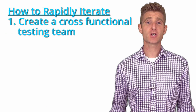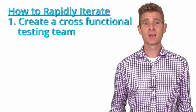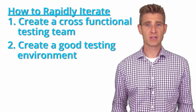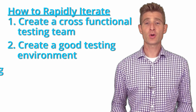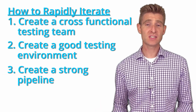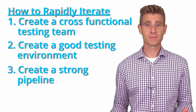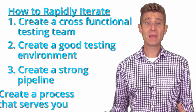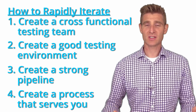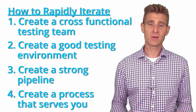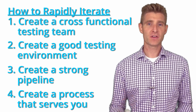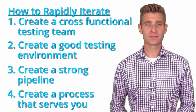First, create a cross-functional testing team. Second, make sure your environment isn't constrained by politics and red tape. Third, make sure you have a very strong testing pipeline so you can gain those efficiencies as you do more testing. And fourth, make the process serve you — don't have a process that makes you a slave and slows you down. Make the process your ally by having a very efficient testing process.